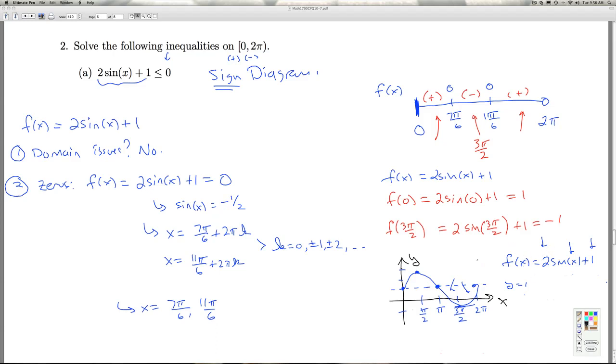So no matter how you get the sign diagram, I go back to my original inequality, and I was looking where f(x) is less than or equal to 0. So what's my final answer to this problem? The f(x) is less than 0 between 7π/6 and 11π/6, and it's equal to 0 at those points, and so there's the final answer.